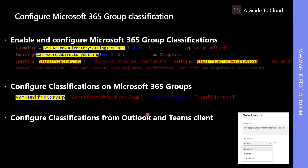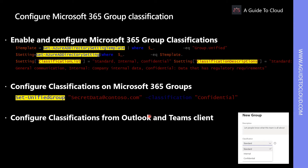For example, when a user creates a group, the user can choose from classification options such as Standard, Internal, and Confidential. Group classification does not exist by default, so administrators will need to create this group classification so that users can use it when they create a group.